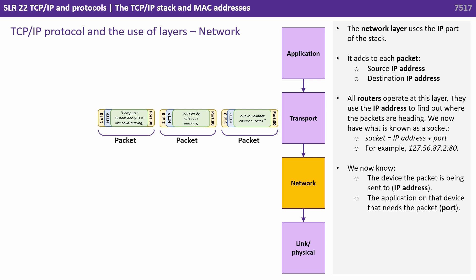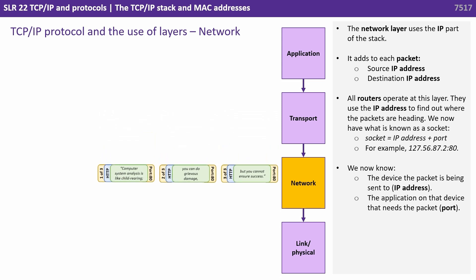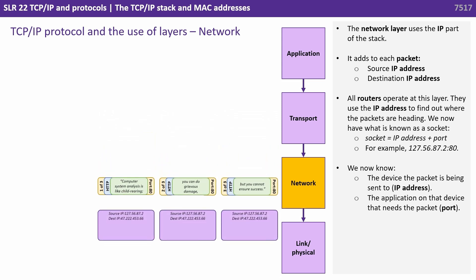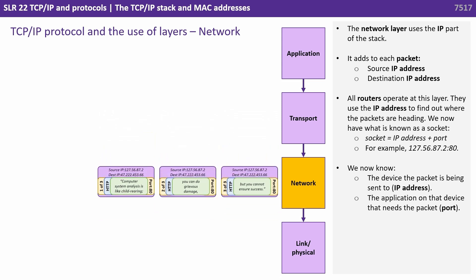The network layer uses the IP part of the stack. It adds to each packet a source IP address and a destination IP address. All routers operate at this layer and use the IP address to find out where the packets are heading. We now have what's known as a socket — a socket equals an IP address along with an appropriate port. We now know the device the packet is being sent to (the IP address) and the application on that device that needs the packet (the port).